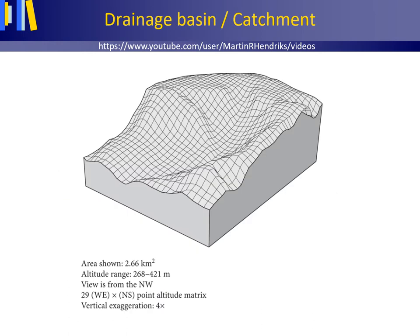This is a picture from my PhD days showing a block diagram of the digital elevation model of the Kriepsbach drainage basin in the Goodland of Luxembourg. You can see the plateau made up of Luxembourg sandstone, the Cuesta Rhin, and you are entering the Kuiper miles. All the precipitation that falls on this area leaves at one location as surface water flow — this is an example of a drainage basin or catchment.